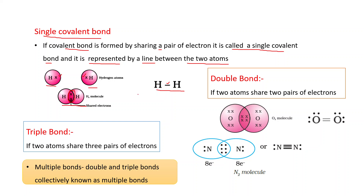One thing more to remember: in case of hydrogen, the duplet is completed. Double bond: if two atoms share two pairs of electrons, then a double bond is formed.